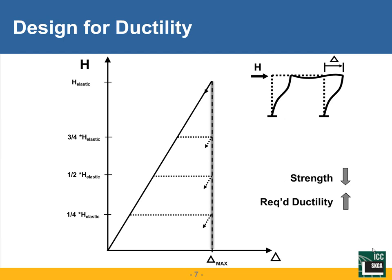Inherent in our building code are observations from many years ago, in which people observed that for a given earthquake, if we had two structures with similar stiffness but different strengths — one that remains completely elastic, shown by the solid line, and another with about one-quarter of that strength but ductile behavior — after yielding, it's able to accommodate large inelastic deformations. If we subject both structures to the same earthquake, on average they're going to have the same maximum displacement.